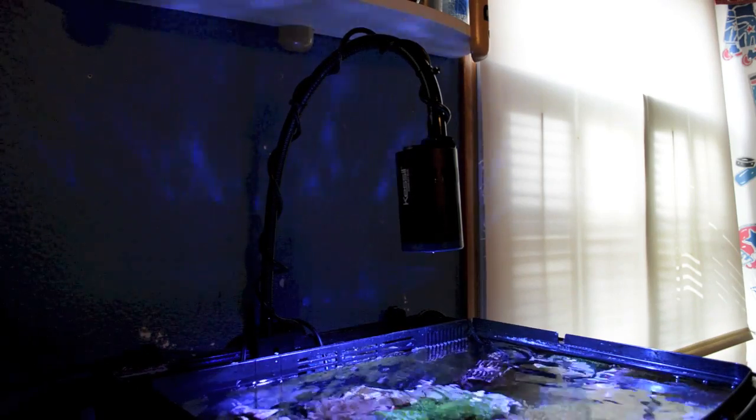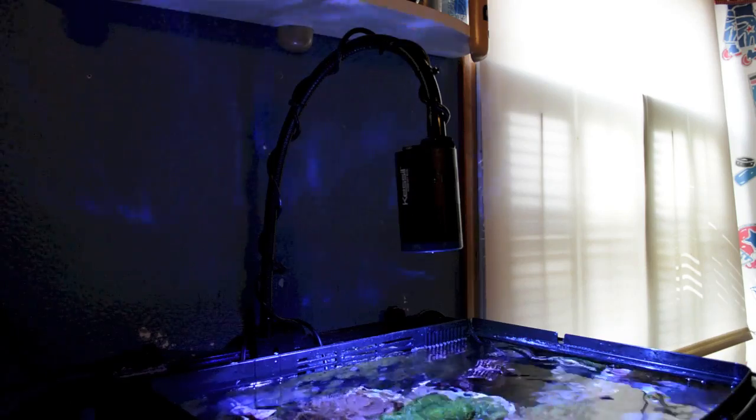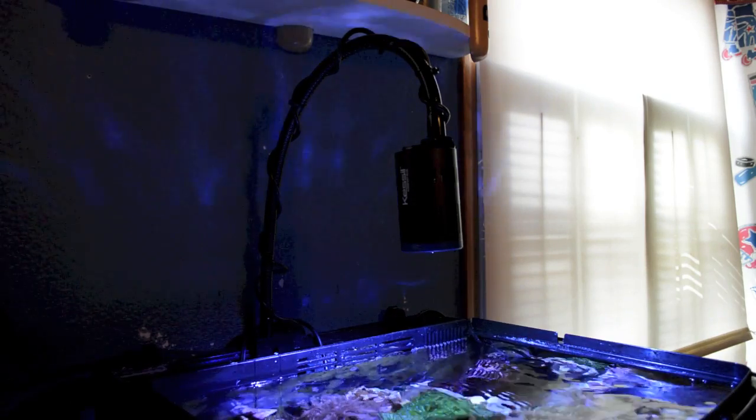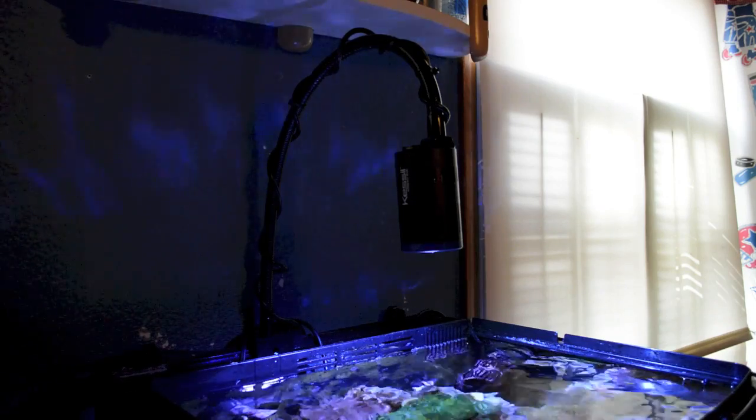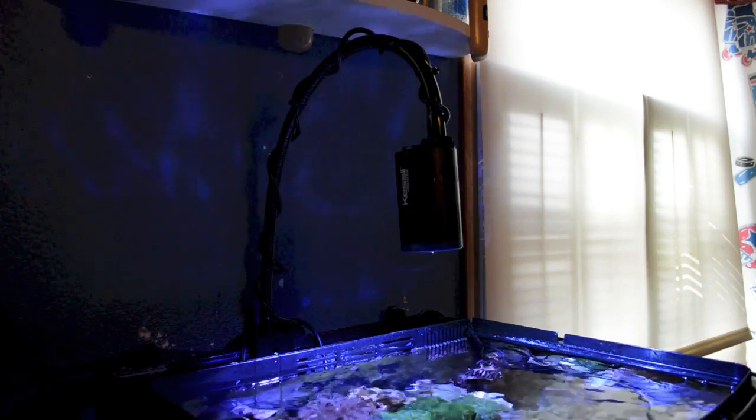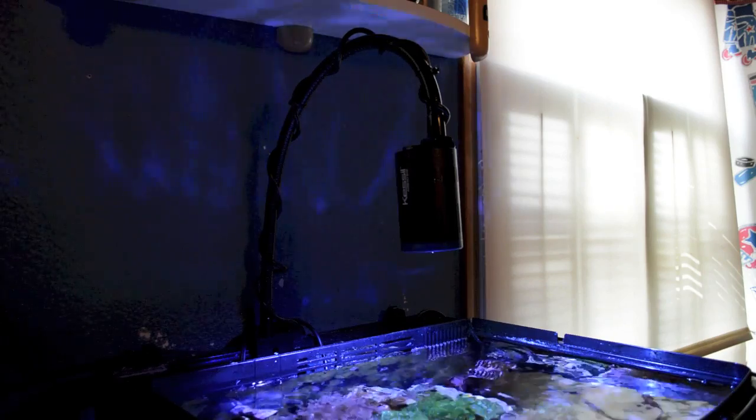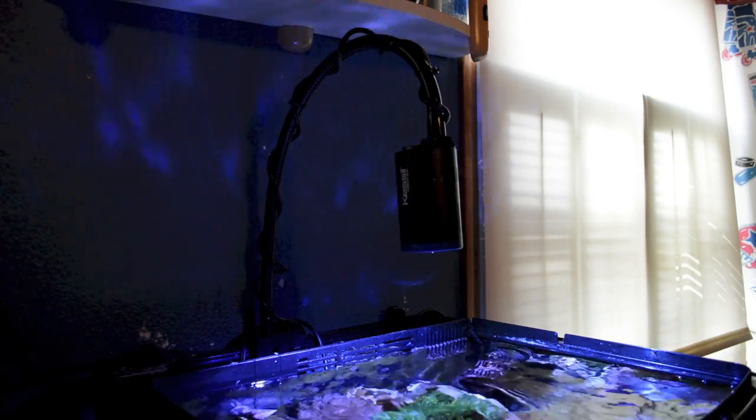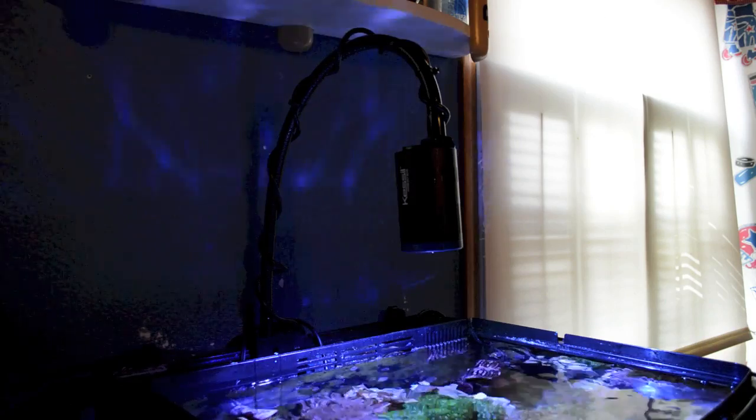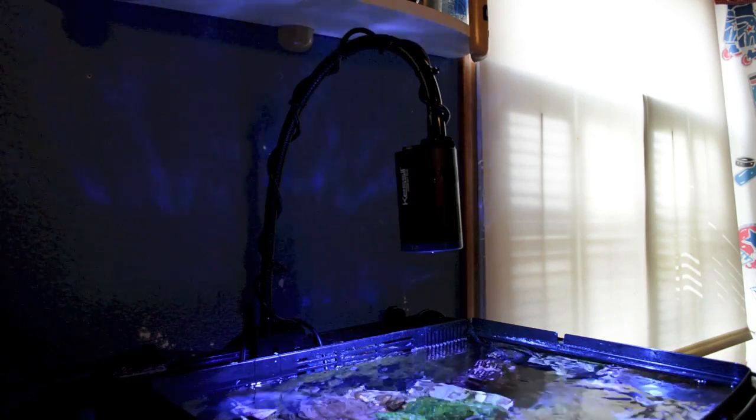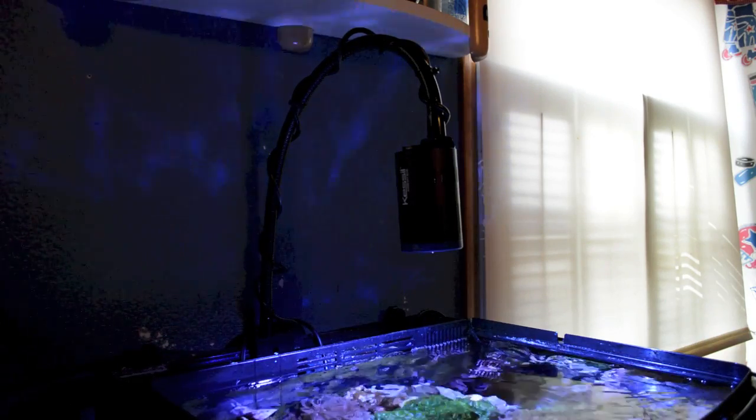So I decided to go with this Kessil A150W Sky Blue. I kind of like the less blue hue to the light. There's two other versions, the A150W Ocean Blue and then the Deep Ocean Blue. So you can get a lot more bluer tint to it but I feel like I can't really see the corals.